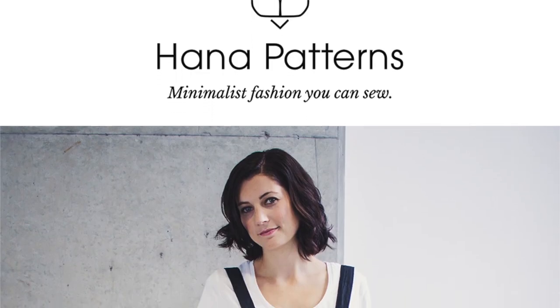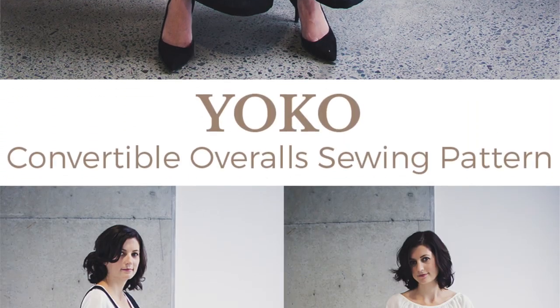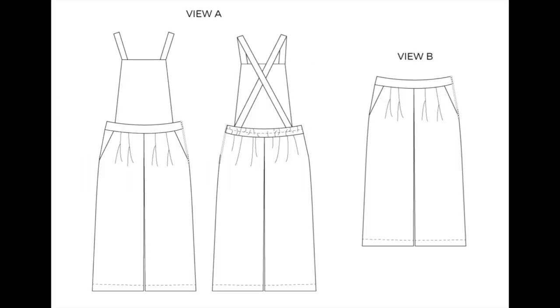You'll need a sewing pattern for a pair of pants that you like. I'll be using the Hannah Patterns Yoko Pants pattern. This sewing pattern can also be converted into overalls by attaching a bib, but for today's tutorial we'll just be using the pants section of the sewing pattern.